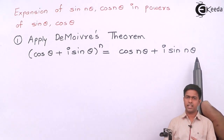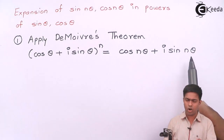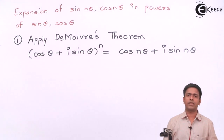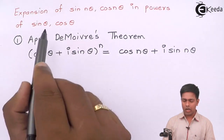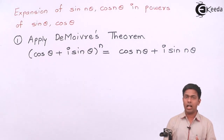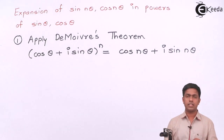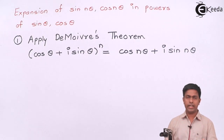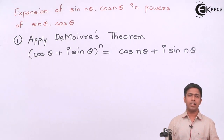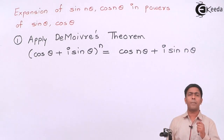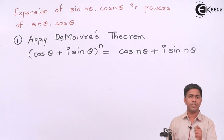Now cos(nθ) and sin(nθ) give me the multiple of θ. To get the answer in powers of sin and cos, we move to step number two: apply the Binomial theorem.